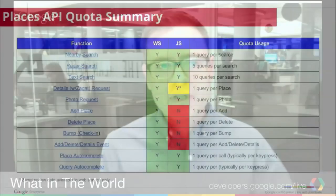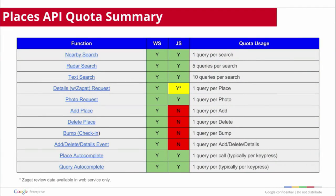The other sorts of operations count as one query each — for example, bringing in a Zagat review is an extra request, or bringing in a business photo is an extra request. So you need to start looking at your implementation to really assess how many queries you're going to be using, as it varies heavily by your implementation. You can design your application to use a lot or to use a little.